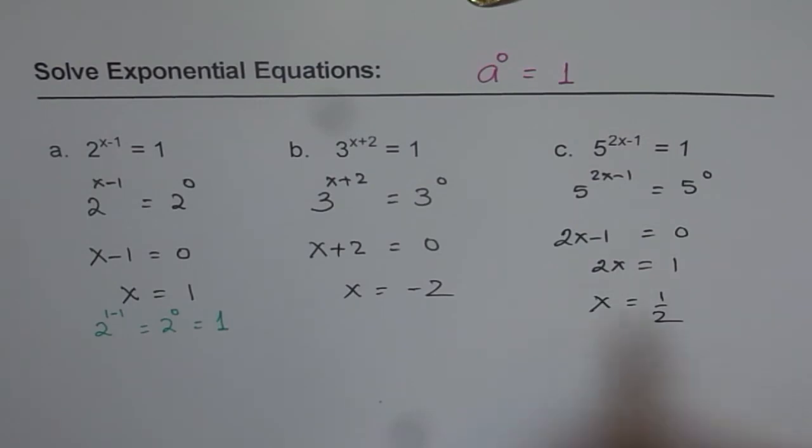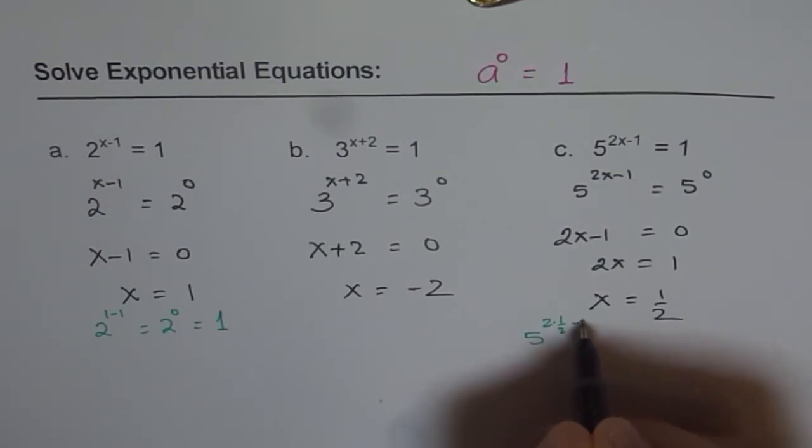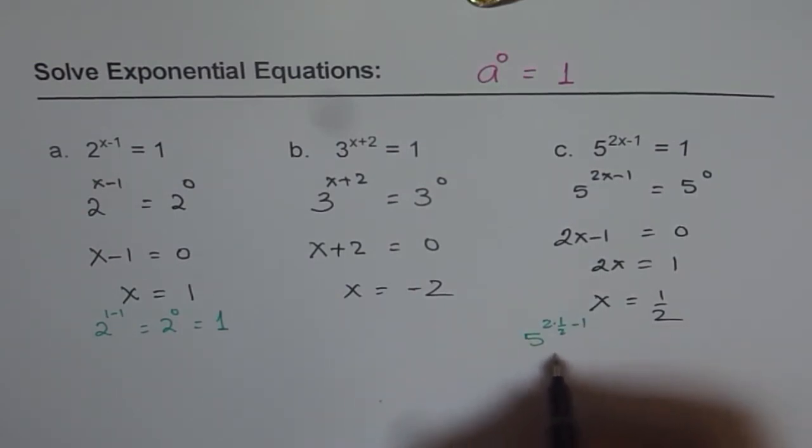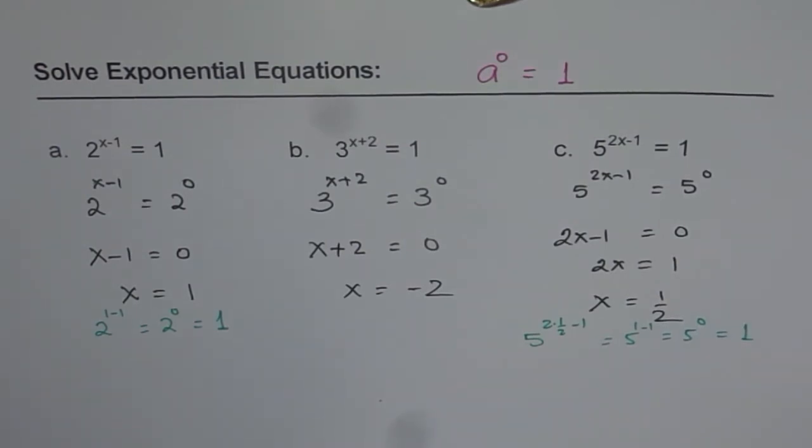Now you can check whether it is the right solution or not. To check, you have to substitute x equals to half. So you get 5 to the power of 2 times half minus 1. Now 2 times half is 1. So you get 5 to the power of 1 minus 1, which is 5 to the power of 0, which is indeed 1. That is how you can solve and check your answers.